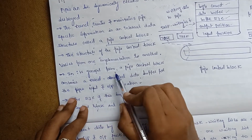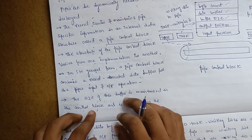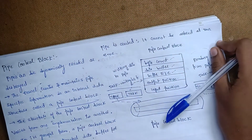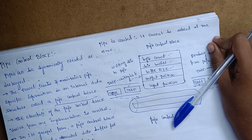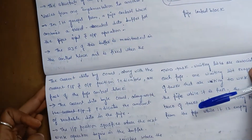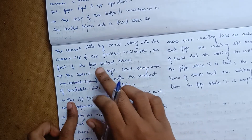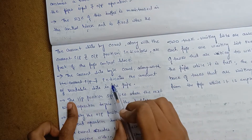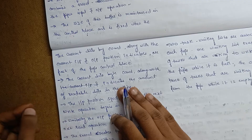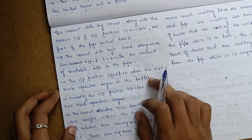In its general form, a pipe control block contains a kernel-allocated data buffer for pipe input and output operations. The size of this buffer is maintained in the control block and is fixed when the pipe is created — it cannot be altered. The buffer size is set at creation. The current data byte count, along with the current input and output positions, indicates the state of the pipe's control block. The current data byte count indicates the amount of readable data in the pipe.